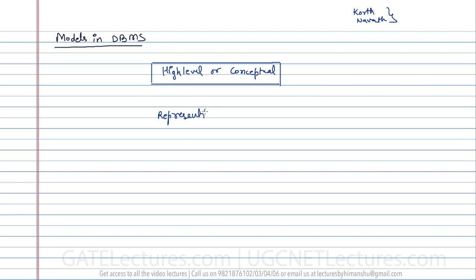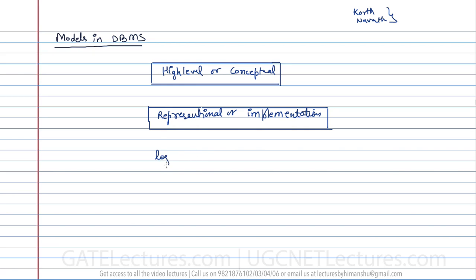Then we have the representational or implementational model — this is the underlying representation layer. The third one is called the logical level or physical data model.